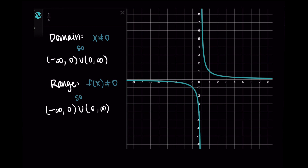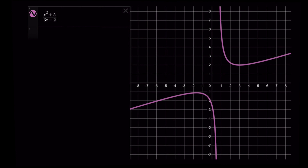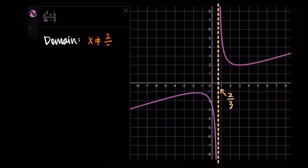Rational functions can have complex behavior — unlike quadratics or polynomials, you often can't just look at one and know what it will look like. Let's look at x squared plus 5 divided by 3x minus 2. We can see there's a vertical asymptote at x equals 2 thirds, since the input 2 thirds makes us divide by zero. That's our vertical asymptote, and it affects our domain. So the domain is x not equal to 2 thirds — that is, negative infinity to 2 thirds unioned with 2 thirds to infinity.